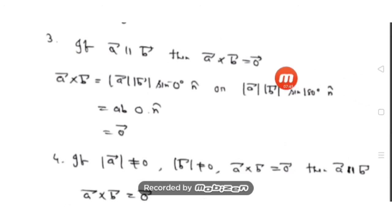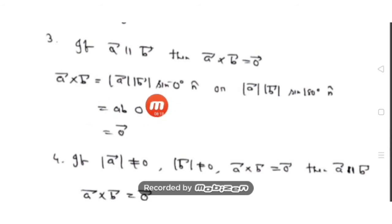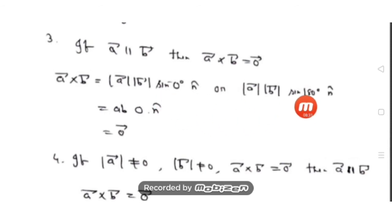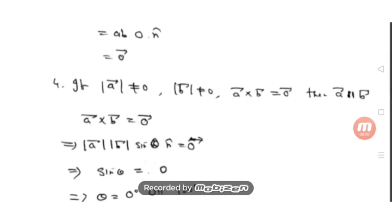Property 3: If a-bar is parallel to b-bar, then a-bar cross b-bar equals zero vector. Compare: in dot product, if a-bar dot b-bar = 0 the vectors are perpendicular, but in cross product, when vectors are parallel their cross product is zero. By definition: modulus a times modulus b times sine theta times n-cap. If parallel, the angle is either 0° or 180°. Since sine(0°) = 0 and sine(180°) = 0, the cross product is the zero vector.